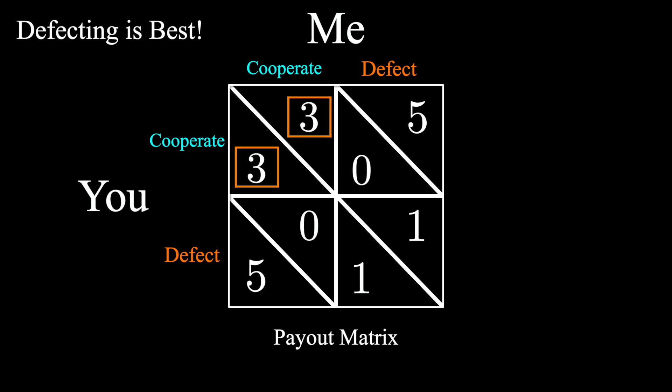But how can defecting be the best move for both players? Each of us ending up with one point is clearly worse than both of us cooperating and each ending up with three points. Let's look at this game rationally, meaning you're playing to win.